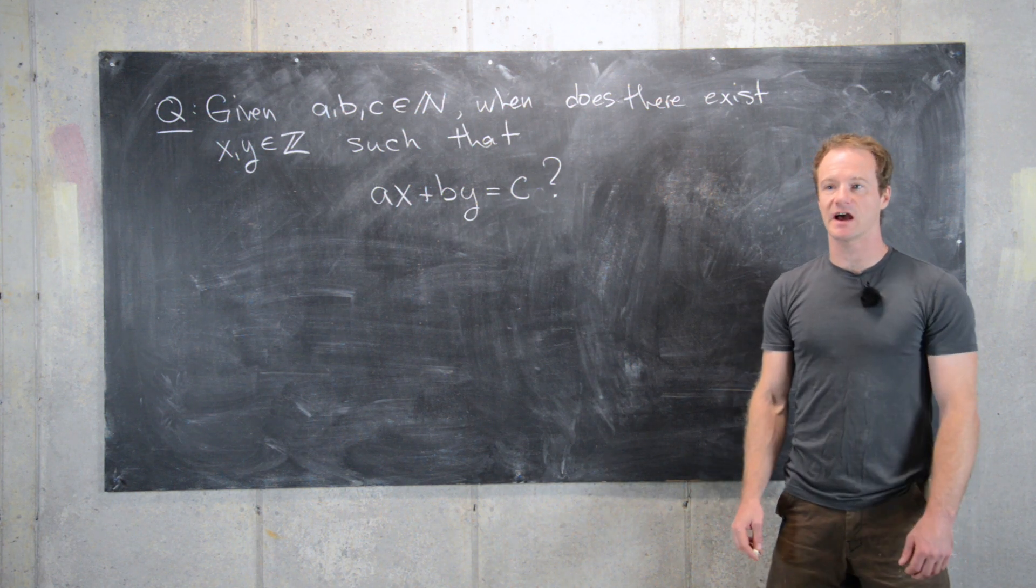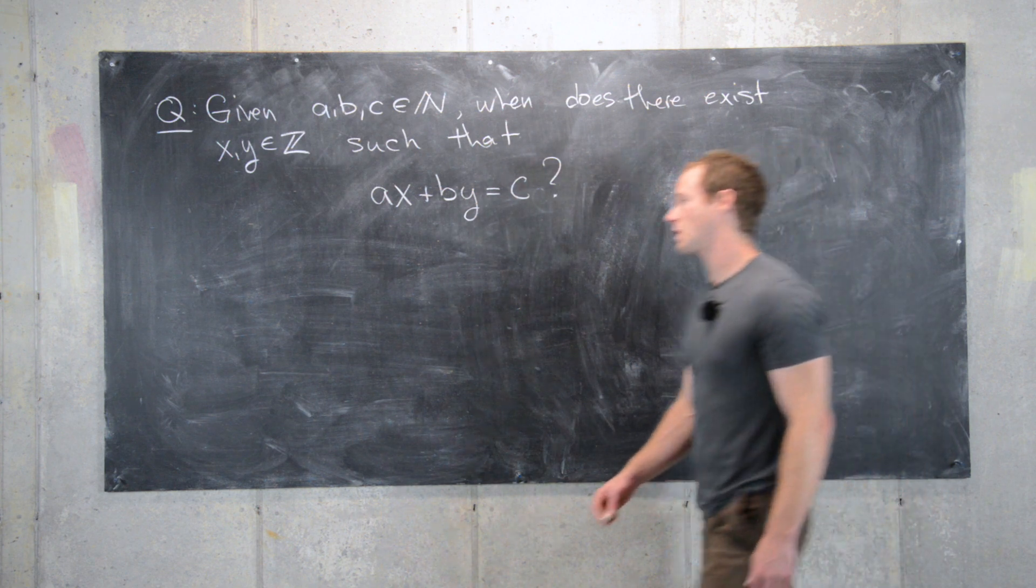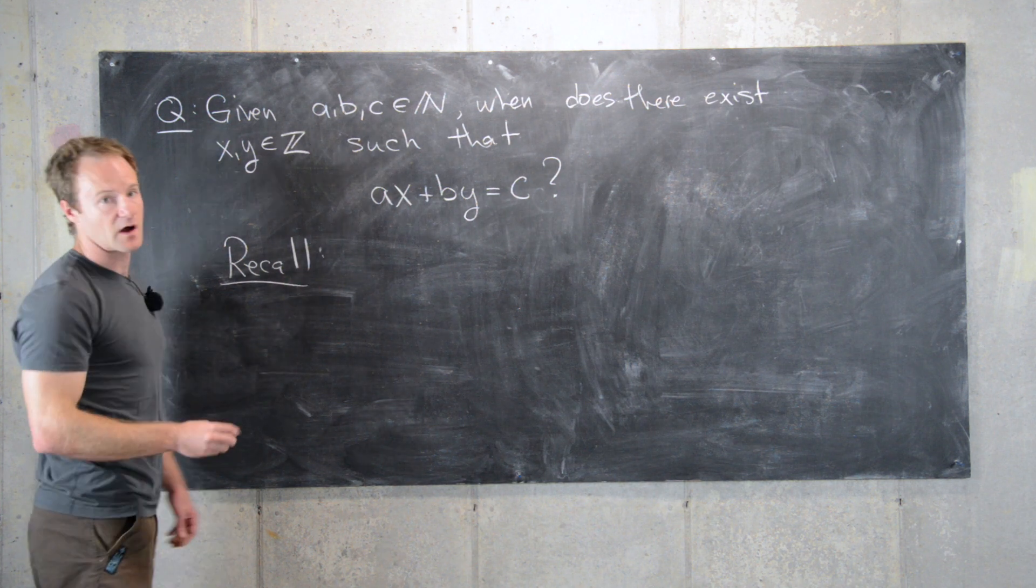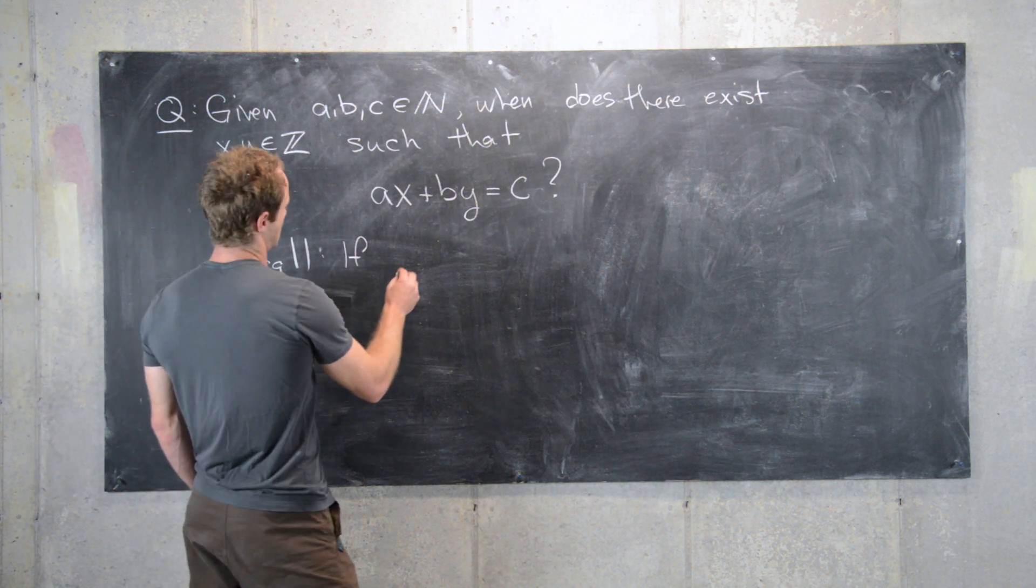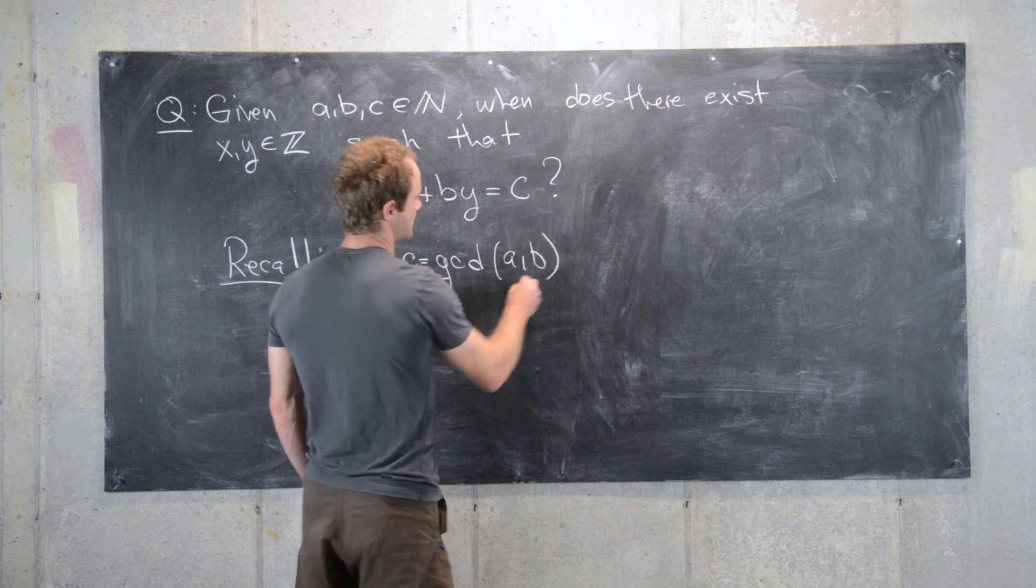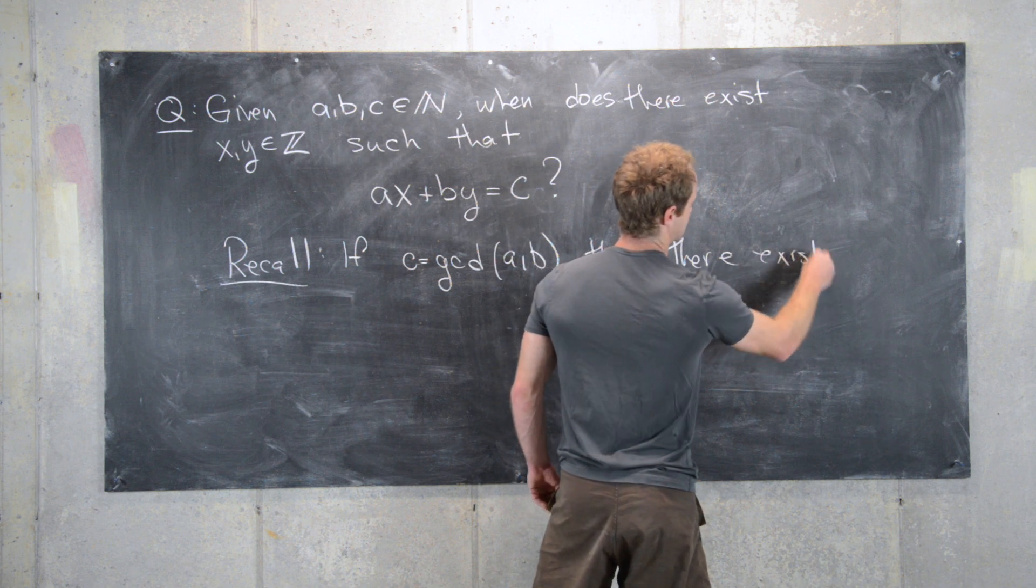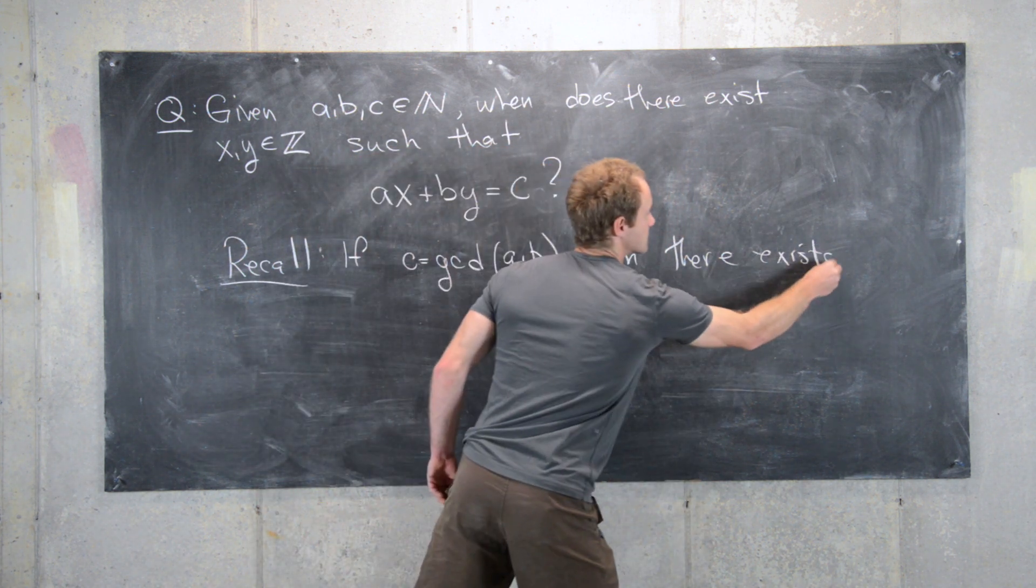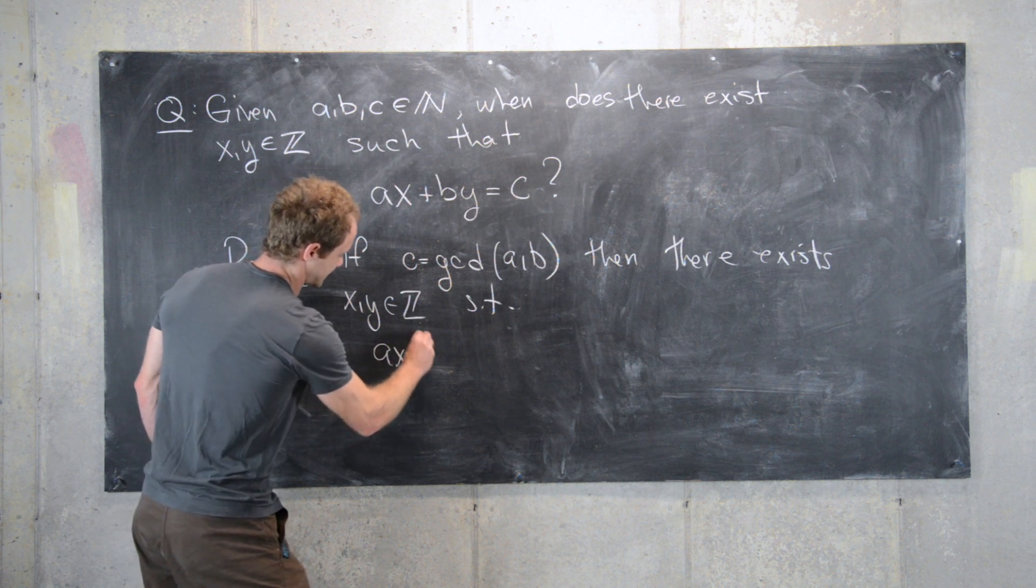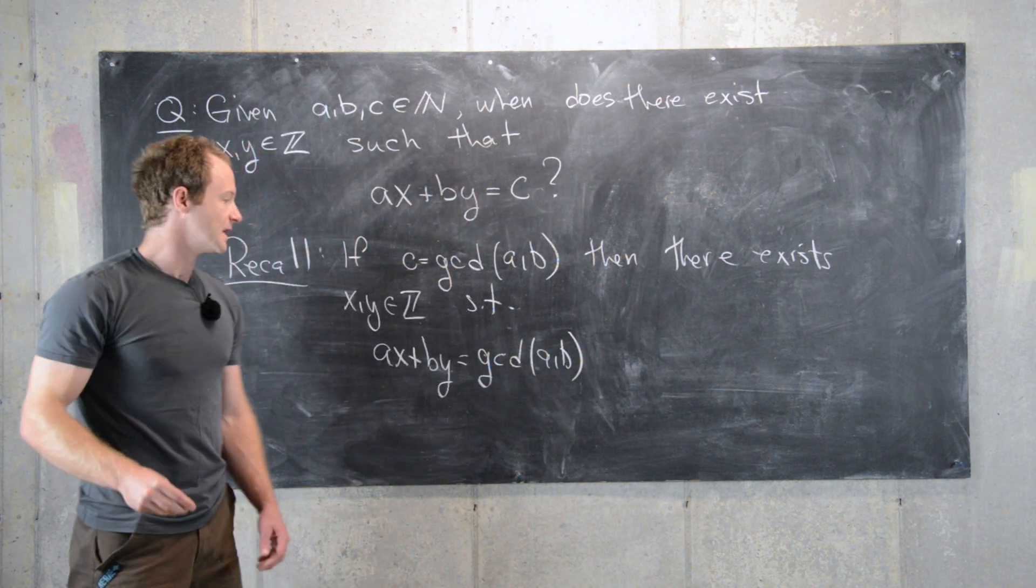This is known as a linear Diophantine equation and we're trying to solve it. Let's recall the following: if c equals the gcd of a and b, then there exists x and y integers such that ax plus by equals gcd of a and b.